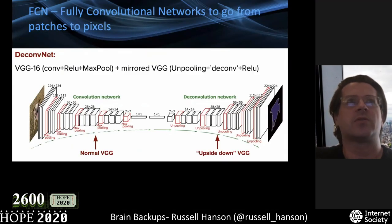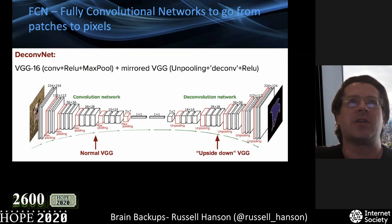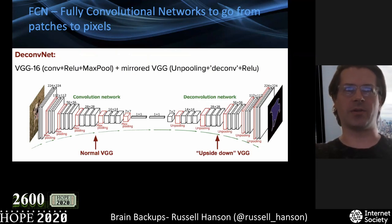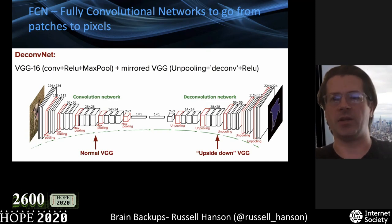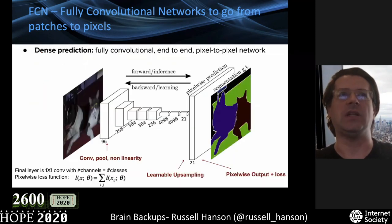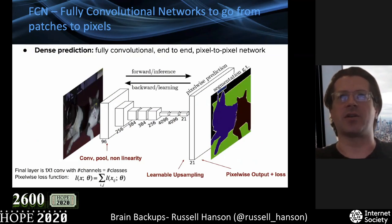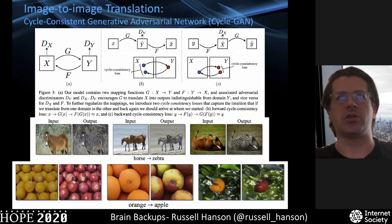One of the ways you can do this is using a fully convolutional network to go from patches to pixels. An FCN or fully convolutional neural network allows you to do pixel-wise annotation of brains. This is just the neural network architecture to do these types of calculations.